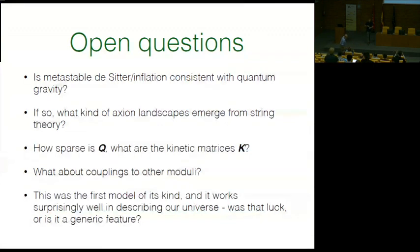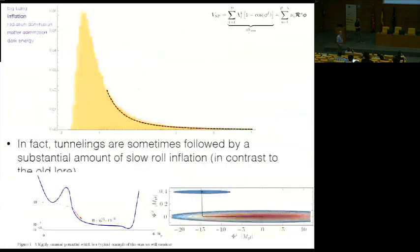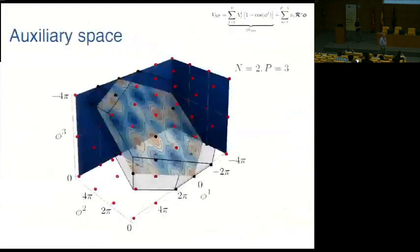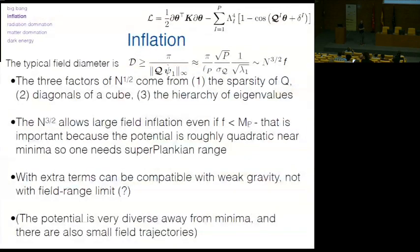Q: In the toy model of these axions, in the low energy regime — don't you get a field range larger than M_Planck? A: It depends on the scale. If f is at the GUT scale you can get an enhancement as large as N^{3/2}. If N is 100 and f is 10^{-2} M_Planck, you'll find some directions with a large field range — which would be in conflict with the swampland conjectures if they apply to any direction in field space.